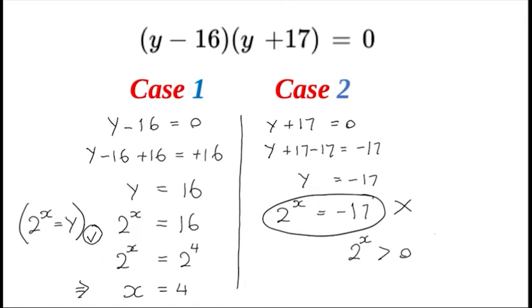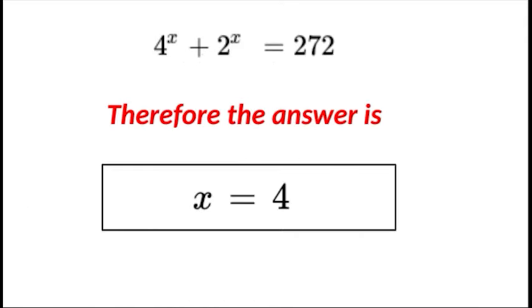So therefore we have just one answer and the solution to 4 to the power of x plus 2 to the power of x is equal to 272 is x is equal to 4.